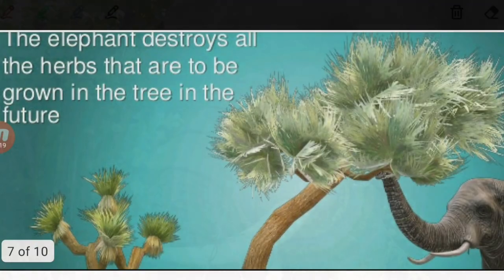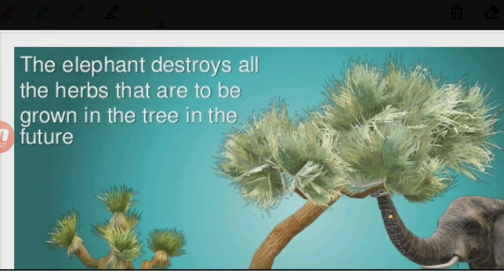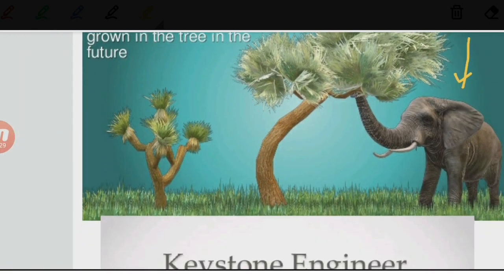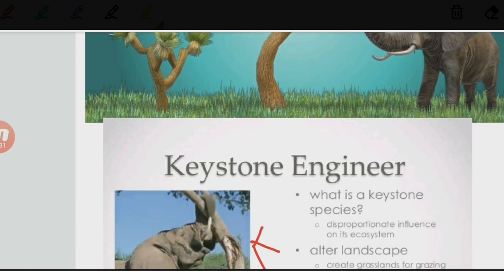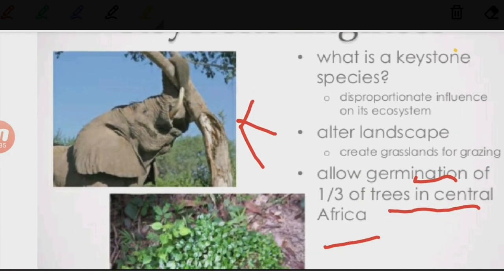Elephants are another perfect example of a keystone species. They destroy shrubs and herbs that would otherwise grow into trees, thereby altering the landscape. This gives them a disproportionate influence on the ecosystem. Elephants create grasslands for grazing and also allow germination of one-third of trees in central Africa.